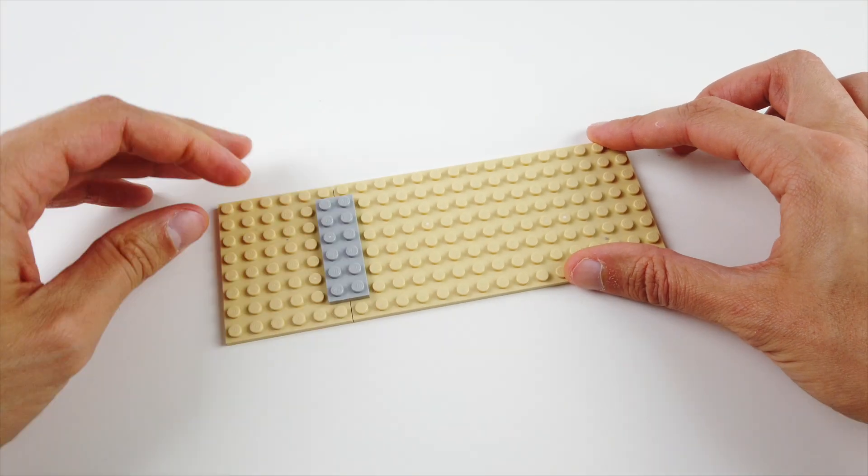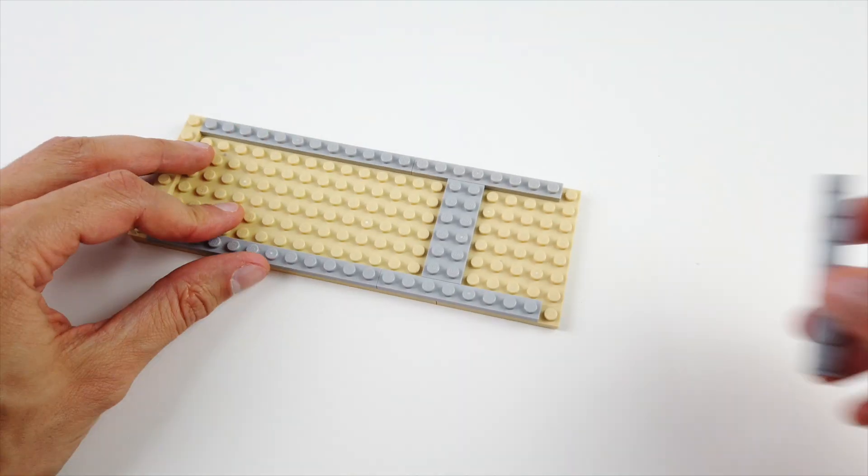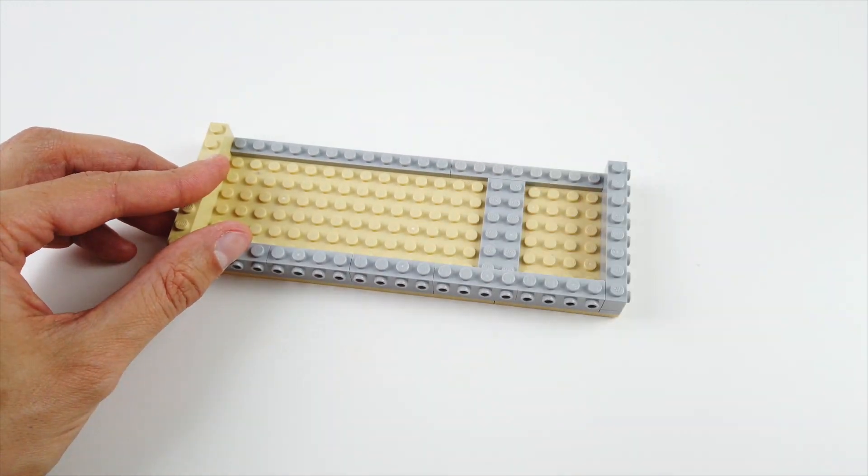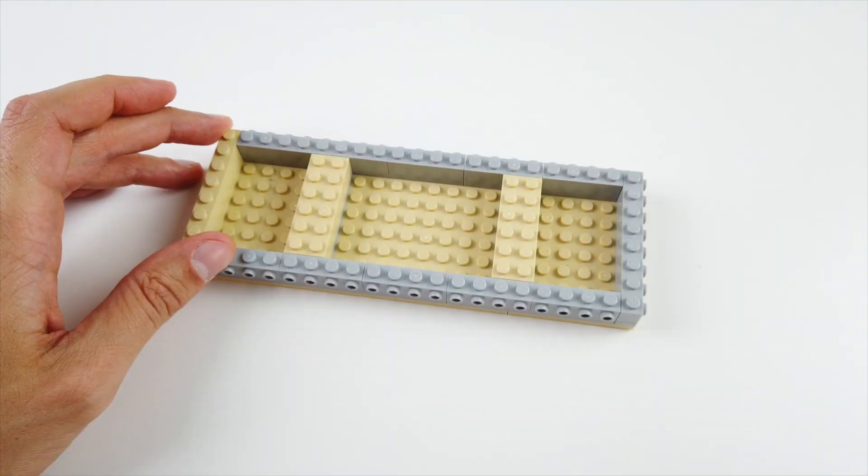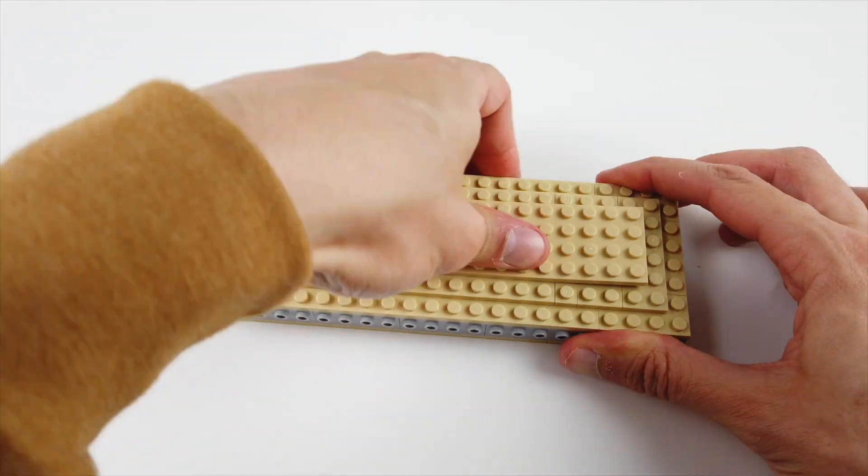a LEGO Subway sandwich. First we start with the bread. Long plates do the job, with some of these special bricks to round off the shape. Later on, as we finish this section with some more plates, it's time to